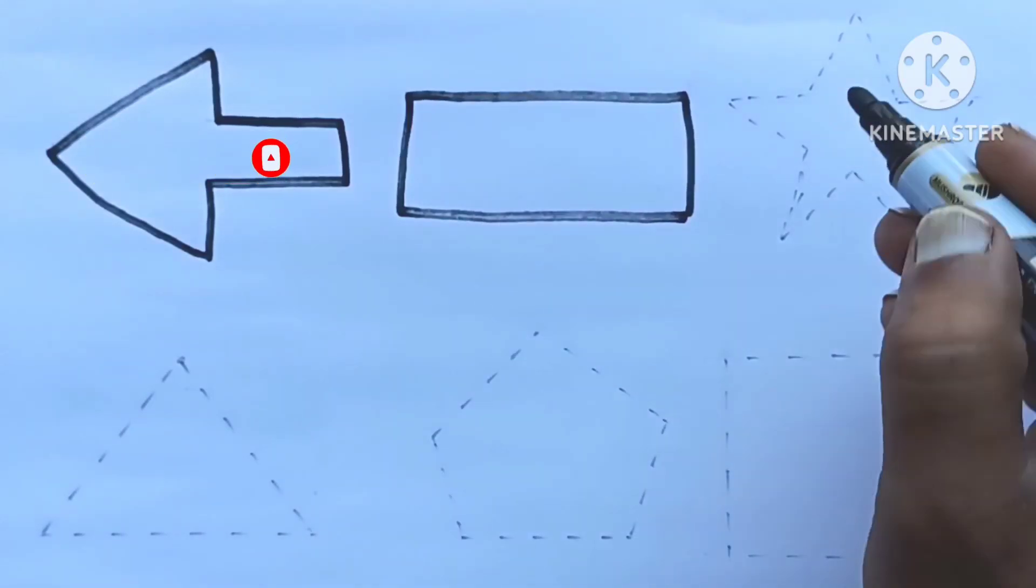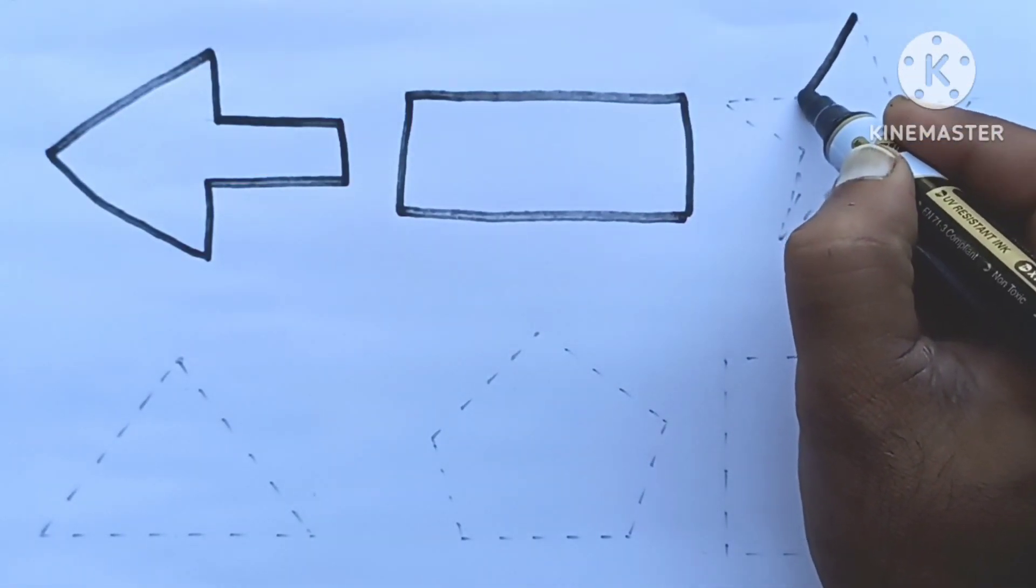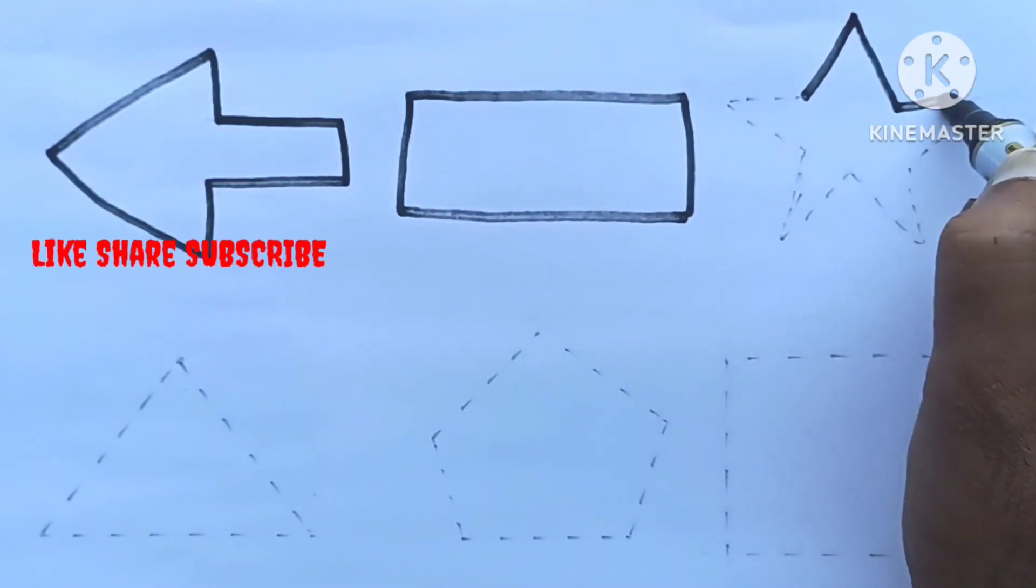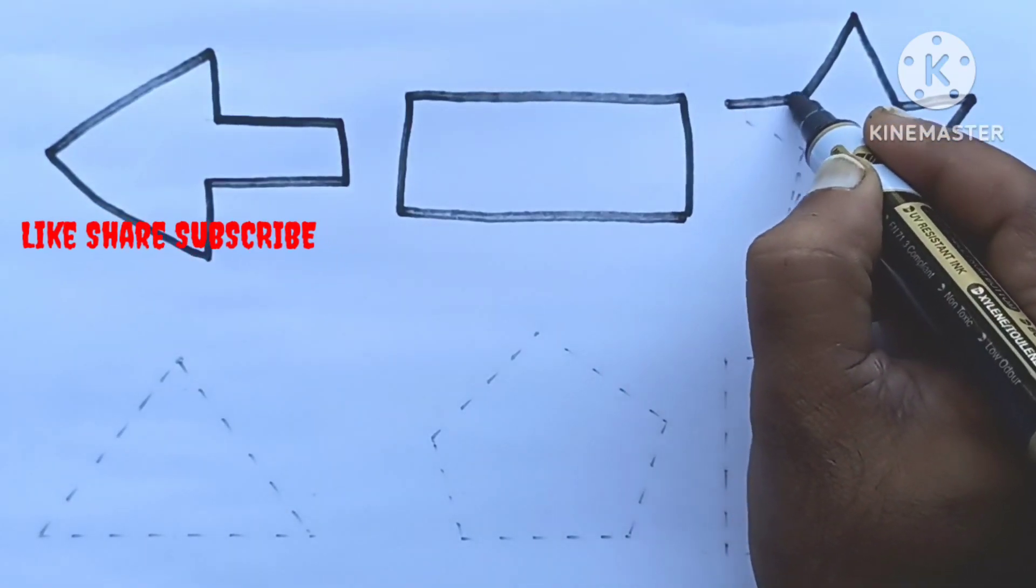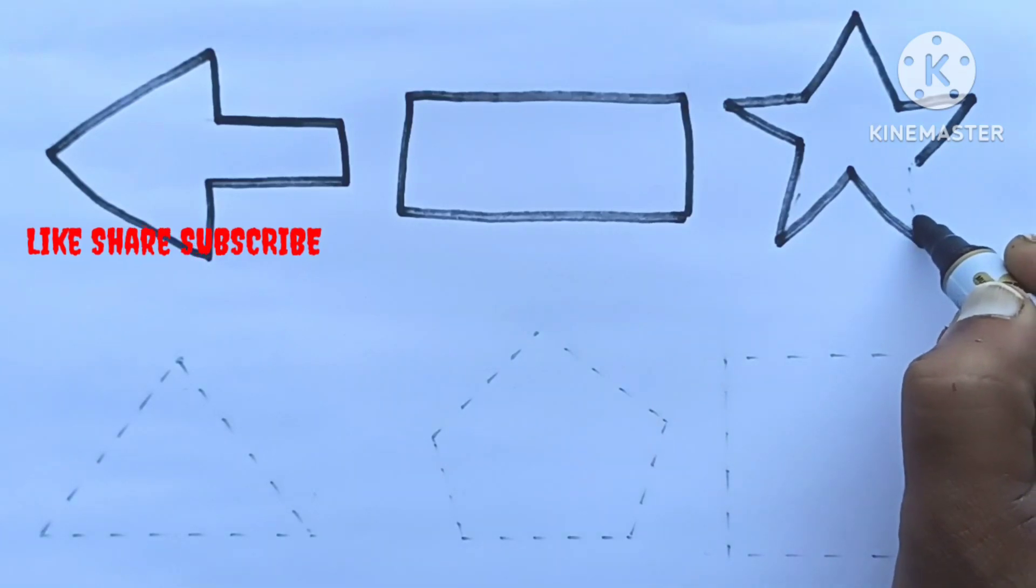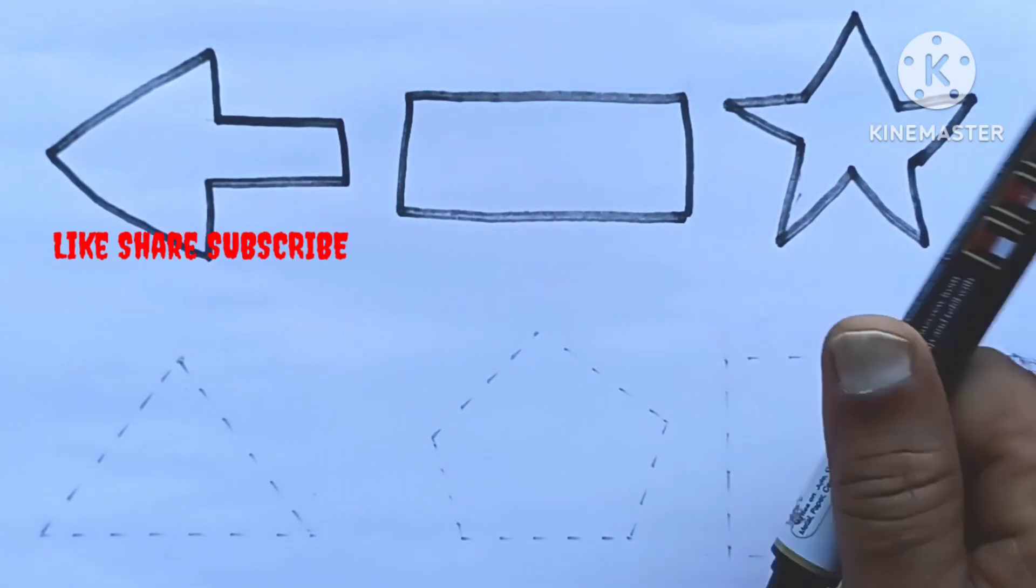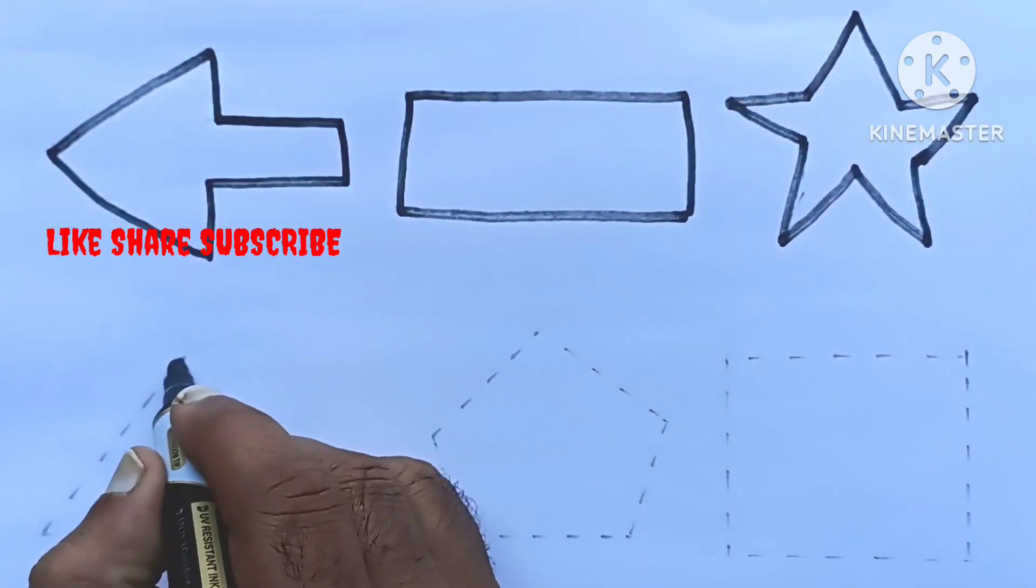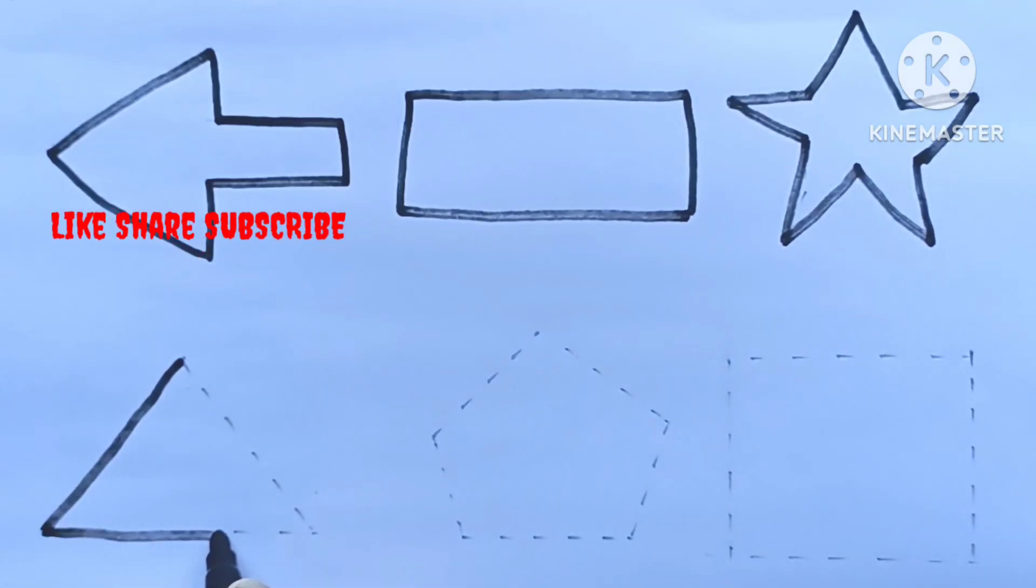Rectangle. Star, we are drawing a star. Star. Triangle, we are drawing triangle.